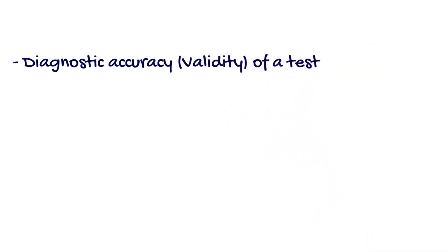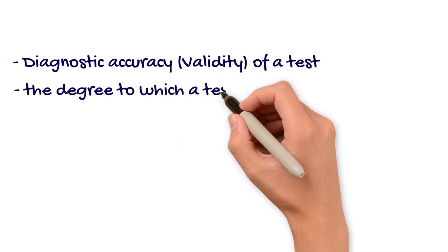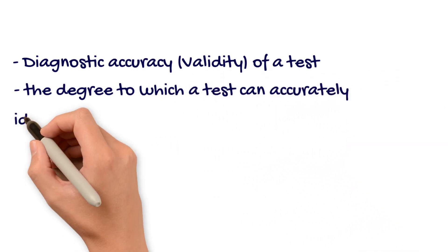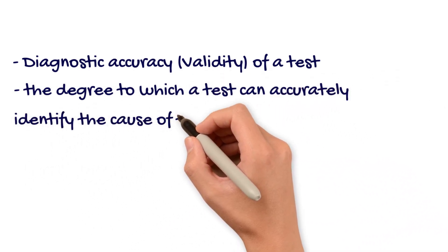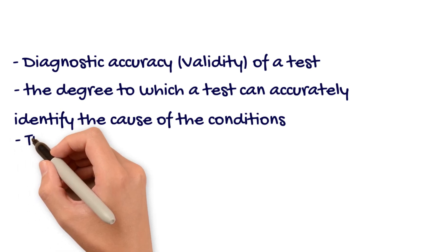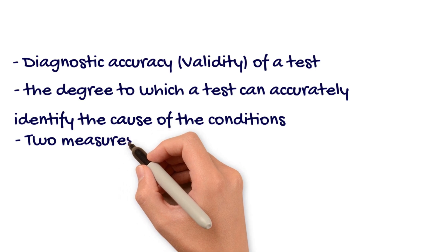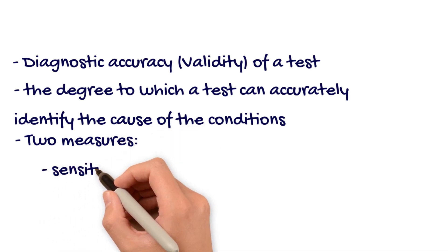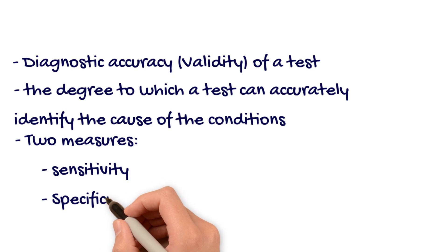This is also known as the validity of a test. The diagnostic accuracy of a test is the degree to which the test can accurately identify the cause of the conditions. In clinical situations, we determine if a test is accurate by determining if it can discriminate between patients with and without a condition. We use two basic measures to determine the accuracy: sensitivity and specificity.